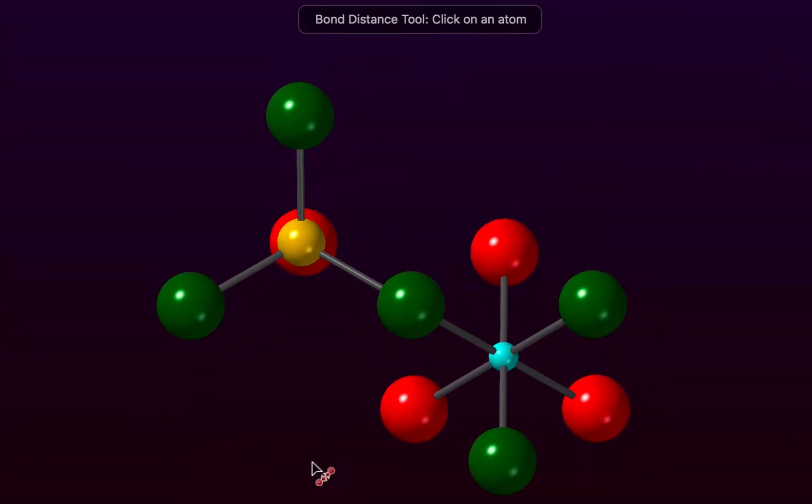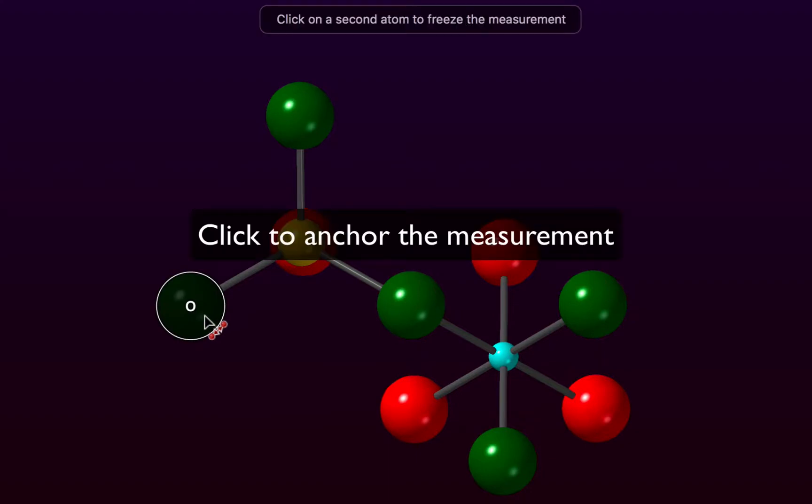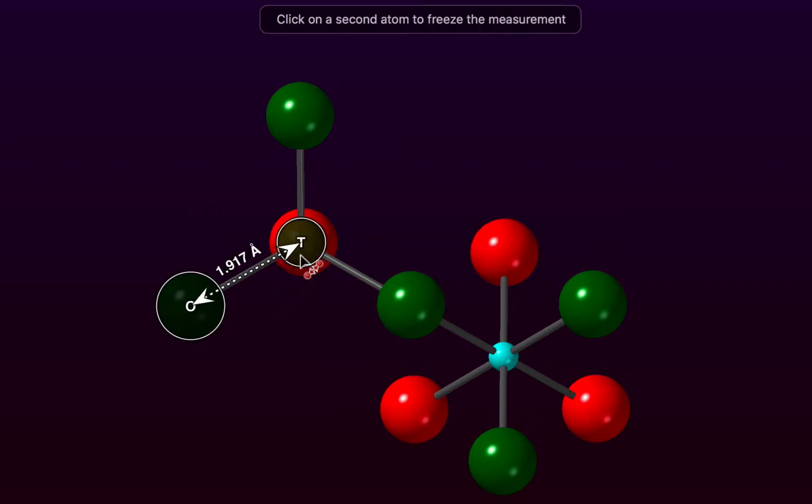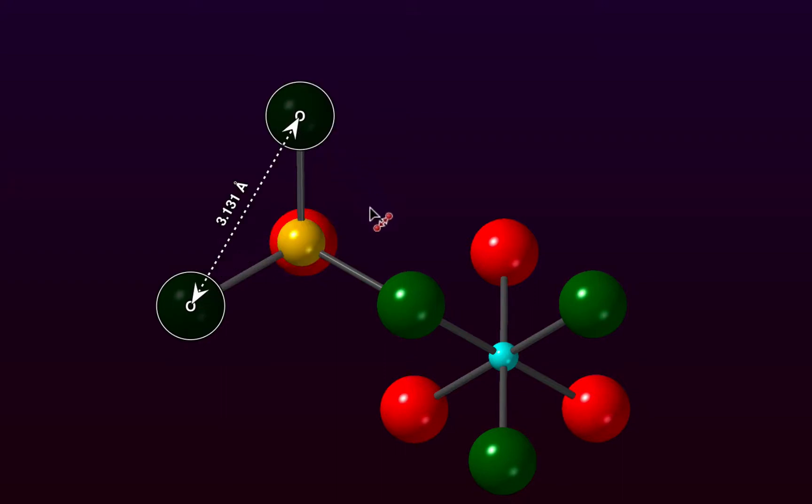we can use that to roll over bonds and measure their distances. This tool also allows you to click on an atom which anchors the tool, and then you have a rollover mode, and you can measure distances to different atoms from the anchored atom.